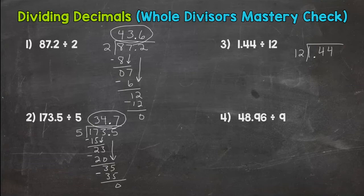I recognize that my answer is going to be less than a whole right away because I'm taking one and 44 hundredths and splitting it into 12 pieces. So my pieces are going to be less than a whole. So divisor's whole, bring my decimal straight up.